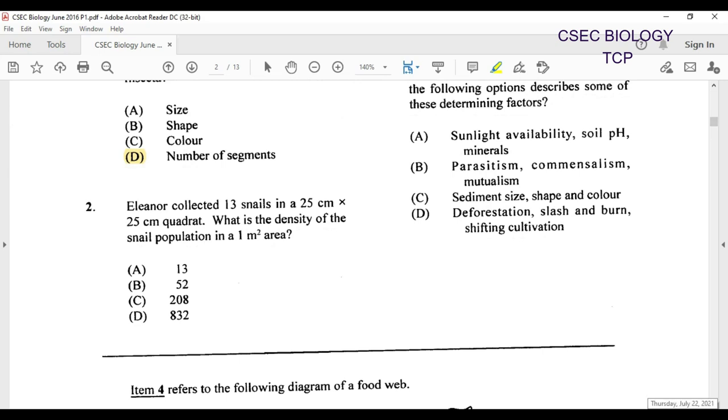Question number two. Eleanor collected 13 snails in a 25 centimeter by 25 centimeter quadrat. What is the density of the snail population in a one meter square area? Now here we are working with two different units, centimeter and meter. I chose to change centimeter to meter and that would have given us 0.0625 and then we're going to be doing that division with the 13. Remember to find the density, it's pretty much finding the average. So our answer using that formula would have been 208. For further details on this particular question you can look at our Quadrat lab which is of course on the channel. So C is our answer for question number two.